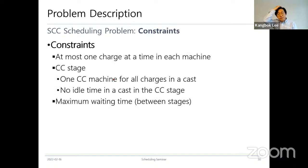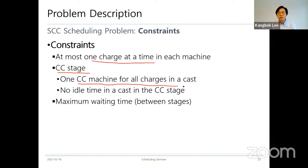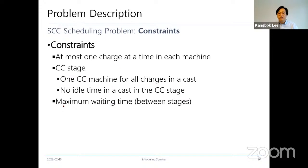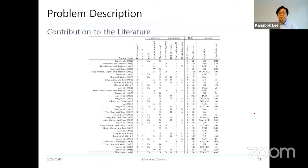The constraints: a typical constraint is at most one charge at a time on each machine. There are special concerns at the continuous casting stage: one continuous casting machine is used for all charges in a cast, they must be scheduled on the same machine, and there is no idle time in between. And as I said, there is a maximum waiting time between stages.